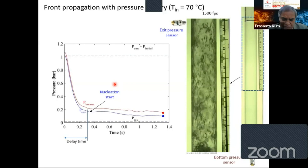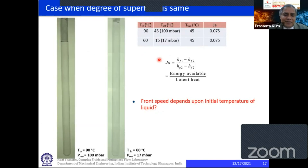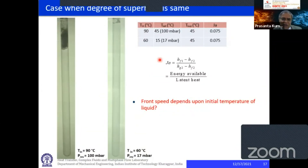It has also been seen that there is a threshold superheat. If we are above the threshold superheat, then propagation of the flashing front takes place. If we are close to the threshold, there is no propagation of the flashing front — rather, there are nucleations at different random locations in the bulk of the fluid. One interesting finding is that as the degree of superheat increases, the speed of propagation of the flashing front increases.